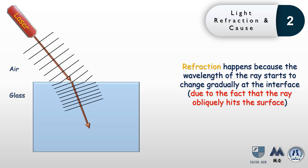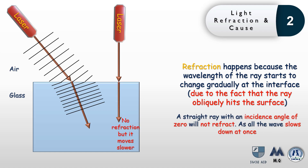To emphasize that refraction only occurs if the ray hits the interface obliquely: if the incident ray had an angle of zero, it will not refract but just slow down. This is because at the interface all wavefronts decrease their wavelength at once, with no gradual change. In air the wave has a large wavelength, but as it enters glass, all of it suddenly experiences a decrease in wavelength at the same time.